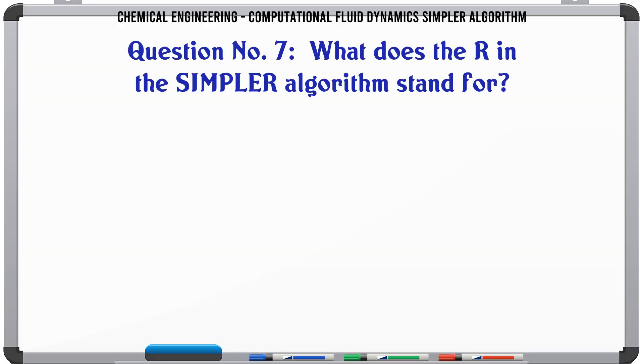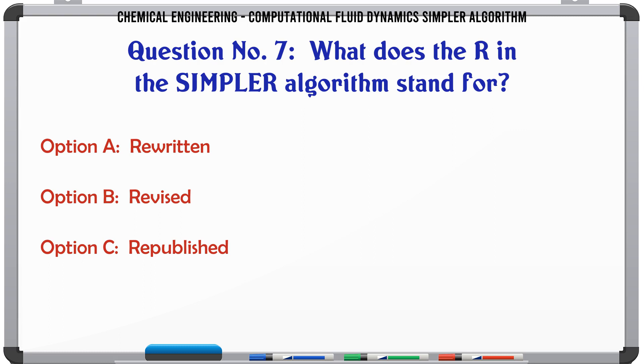What does the R in the SIMPLER algorithm stand for? A. Rewritten, B. Revised, C. Republished, D. Refresh.